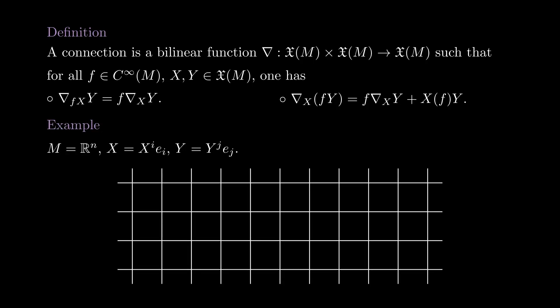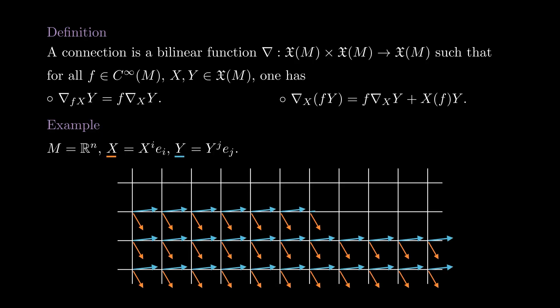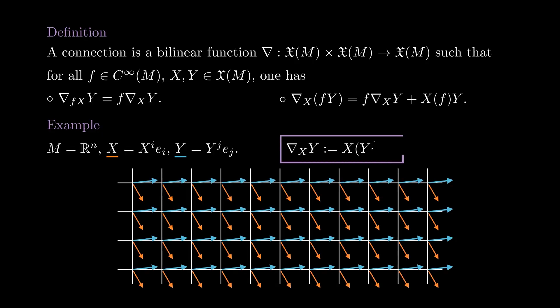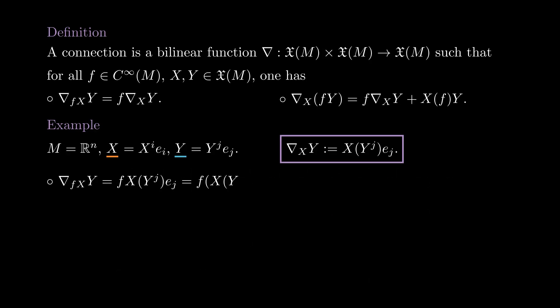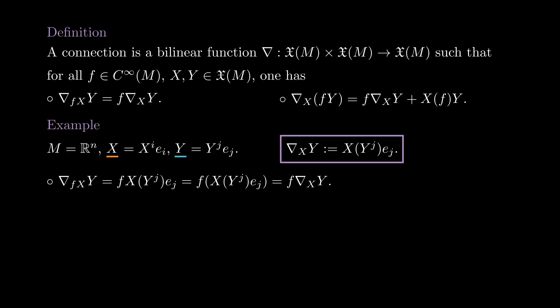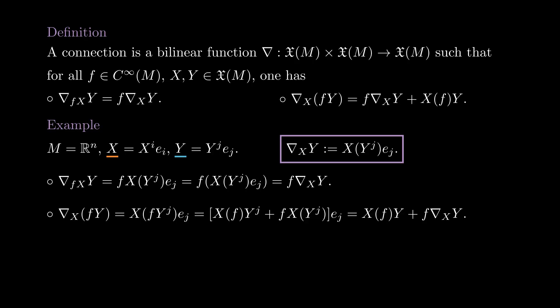Let's go to Rn to see how a connection looks like. If we have two vector fields X and Y, we can define Nabla to be the vector field whose components are the derivatives of the components of Y in the direction of X. We can check that if X is replaced by f, then f comes out; and if we replace Y by f, we can apply the standard Leibniz rule to each coordinate and get the Leibniz property for Nabla.